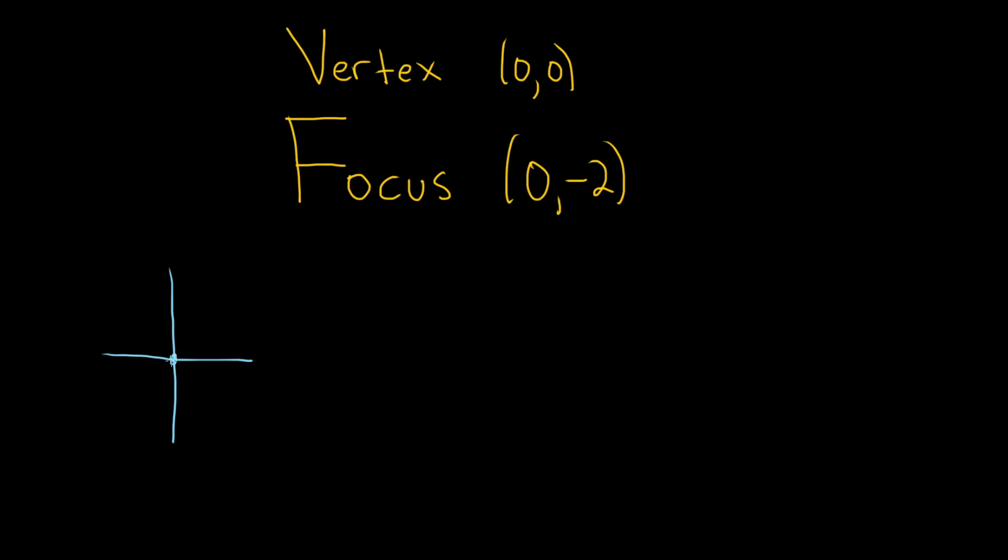So the vertex is here and the focus is 0, negative 2. So that's going to be down here, like here. So because the vertex is here and the focus is down here, recall that a parabola always opens towards its focus. So that means that this parabola opens down.